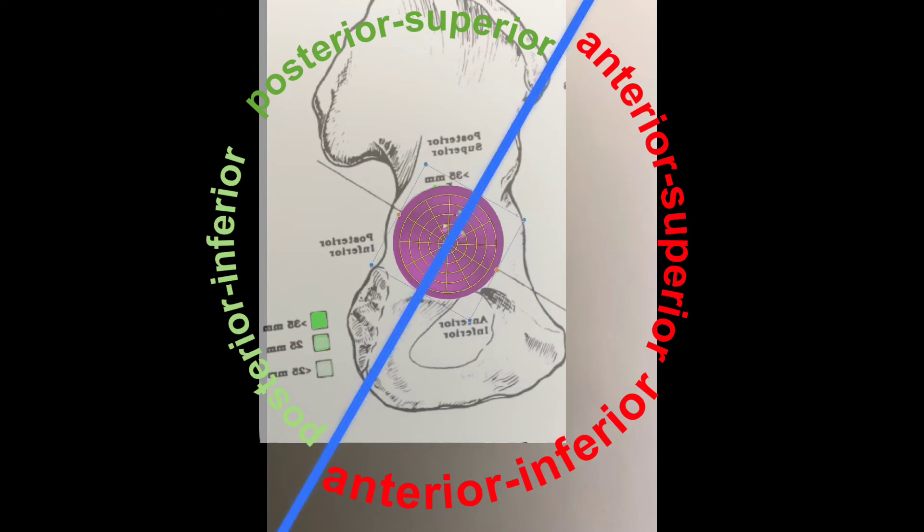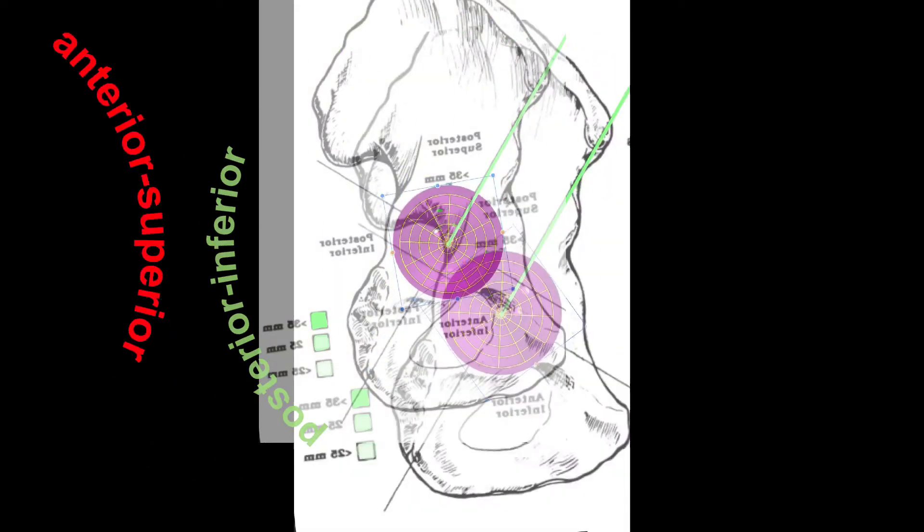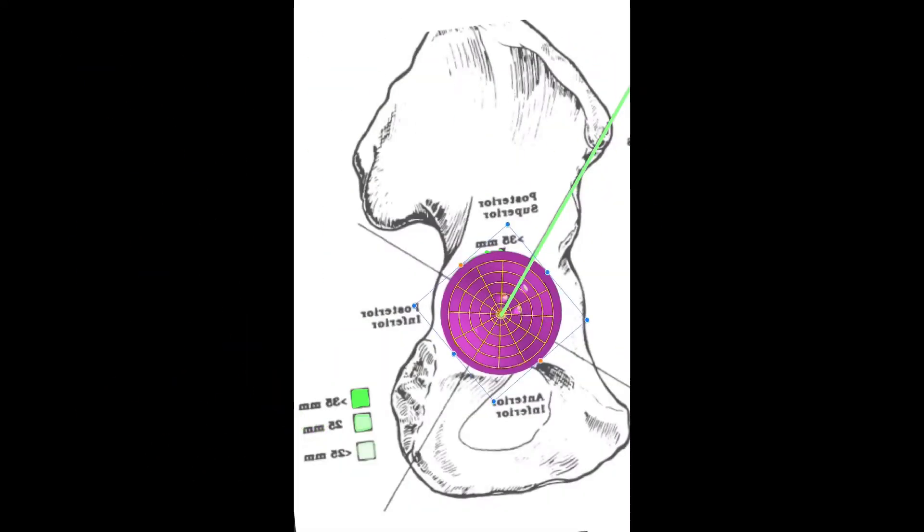Green area presented over the cup surface in augmented reality shows the best area for screw placement. The surgeon can adjust the rotation of the cup so that the cup holes are in optimal position for safe screw placement.